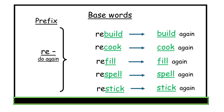Next, I add a prefix to each base word. I explain what the prefix means. In this example, it is re, that means do again. Then we talk about how the meaning of each base word has changed.